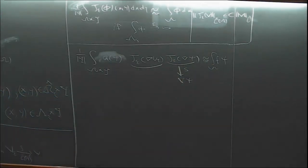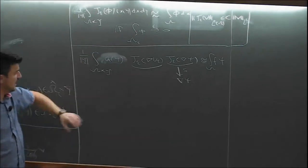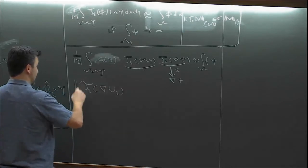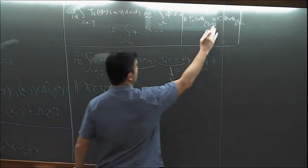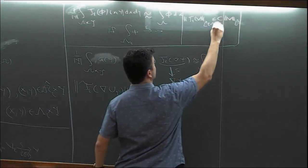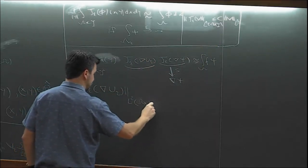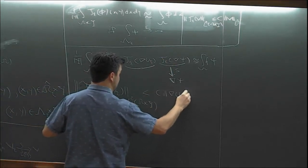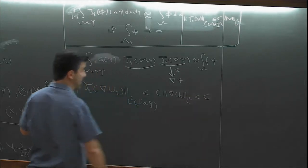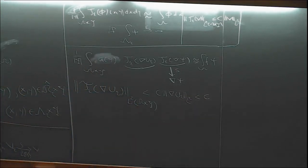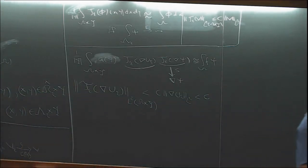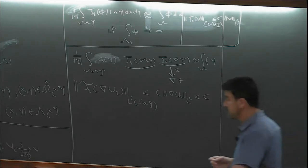From the properties of the unfolding operator, we proved that ‖T_ε(v)‖ is bounded by the norm of v. So if we apply this to the sequence T_ε(∇u_ε) in L²(Ω × Y), this should be bounded by the norm of the gradient, which is bounded by a constant because u_ε solves our PDE.